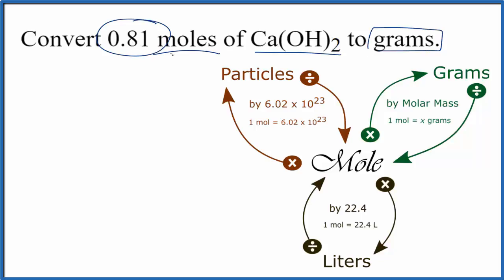So this number here, 0.81, that's just something I made up for the problem. So we're going from moles to grams, and we have 0.81 moles of calcium hydroxide.